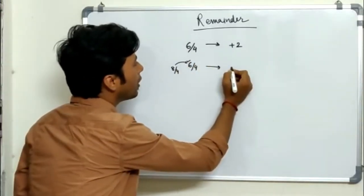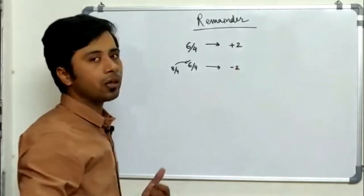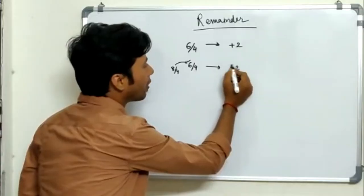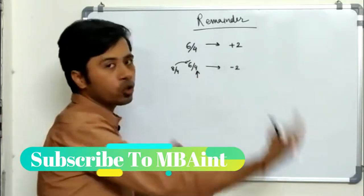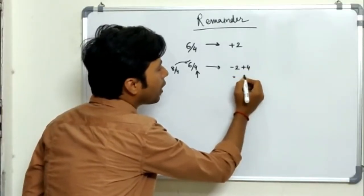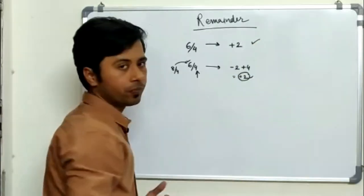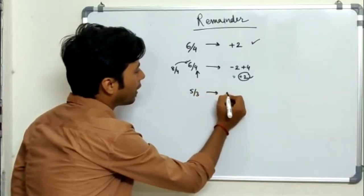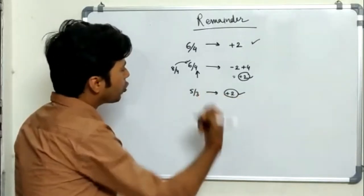I can also say that 6 is minus 2 less than 8, which would have been completely divisible. So it's actually the negative remainder concept. Whenever we get a negative remainder, what we do is we add it to the divisor to get the actual remainder. So we get positive 2 as the remainder in the first case.